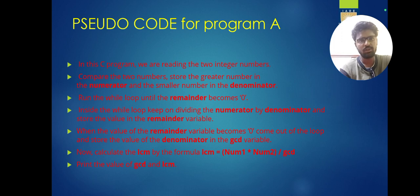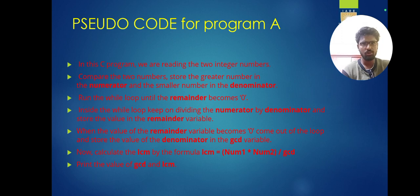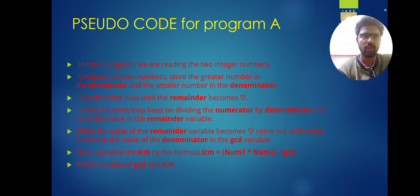Before getting into the loops — loops are basically of two types: exit and entry loop. We can use any loop to find the greatest common factor, but in my program I am going to use a for loop. In this C program we are reading two integer numbers A and B into the compiler.